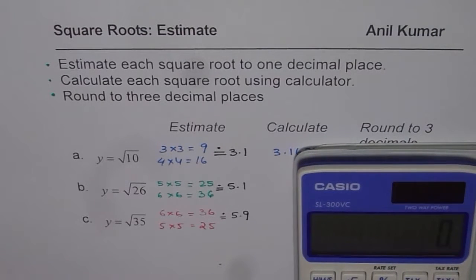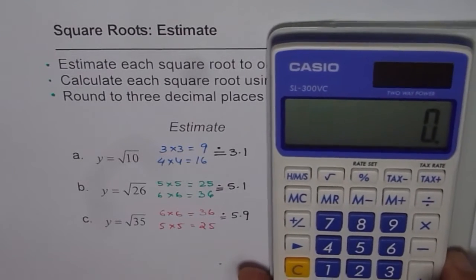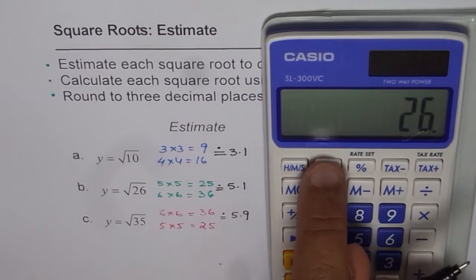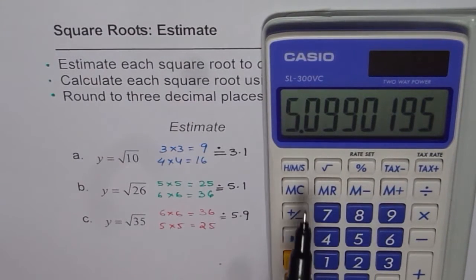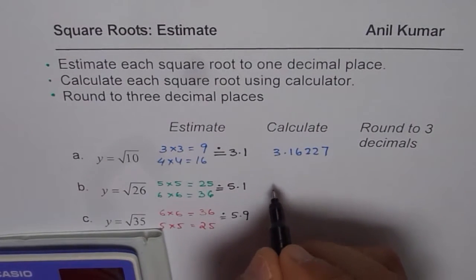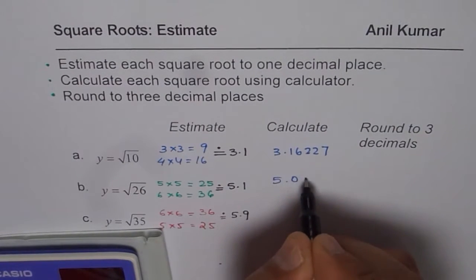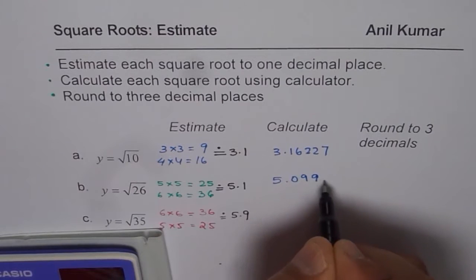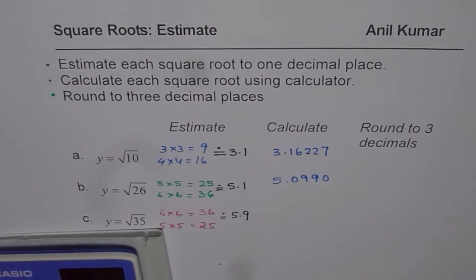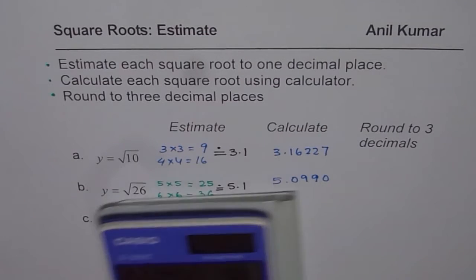For square root of 26, we will first press the number 26 and then the square root sign. It gives us the answer 5.0990. We write 4 decimal places since we need to round to 3 decimal places.